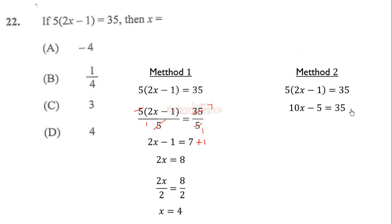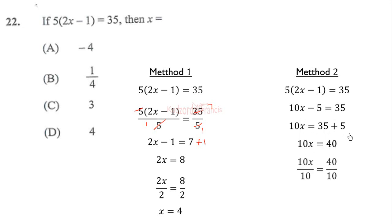Adding both sides by 5, we simplify to get 10x equal to 40. Dividing both sides by 10 gives x equal to 4. We get the same result with both methods.